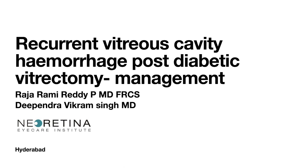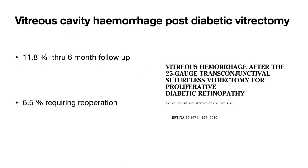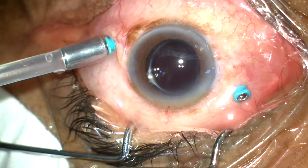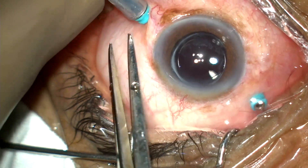Welcome. Today I'll be discussing recurrent vitreous cavity hemorrhage post diabetic vitrectomy, which has an incidence of 11.8% for six months follow-up, and roughly 6.5% of these require re-operation. This video will be showing intraoperative findings in these cases and the best practice patterns to manage these patients.